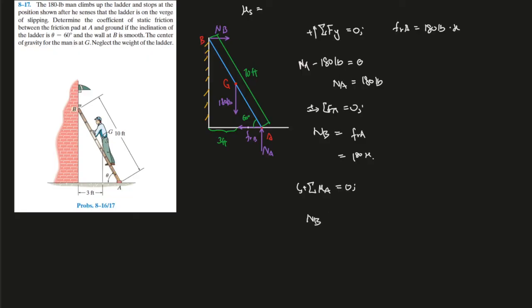Sum of the moments at A, going clockwise is positive, equals zero. So NB is creating a clockwise rotation. Let's try the simplified version, which is 180 times the distance, which is 10 feet times sine of 60.